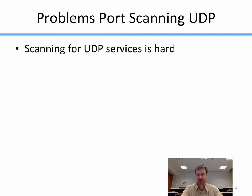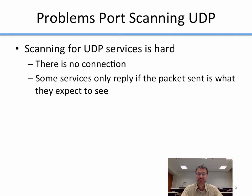There are a lot of problems we come up against when trying to scan for UDP, and the main thing is that it's really hard. There's no connection, so there's no guaranteed transmission of packets like we have in TCP. In TCP, if the port is open, I can guarantee a response. The biggest issue is that some services only reply if the packet sent is what they expect to see. For example, if you send a mangled packet to a DNS server, it's not going to reply — it will just drop your incorrect packet. So if you don't know what service you're looking for, you might not get a reply even if a service is there.